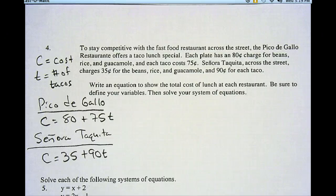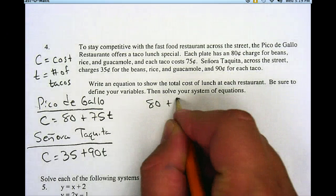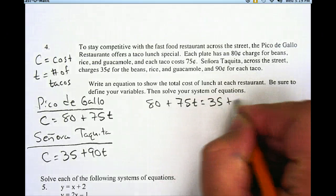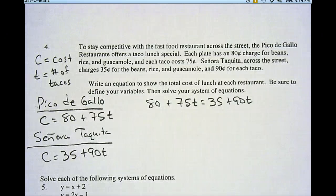So since they're both equal to C, C is the same thing as both of those, I can set those two equations equal to each other and solve for how many tacos would cost the same amount of money. So if I do that, I have 80 plus 75t is equal to 35 plus 90t. Now, let's solve for t. Find out how many tacos they have the same price. How many tacos you would need to buy for them to be the same price.